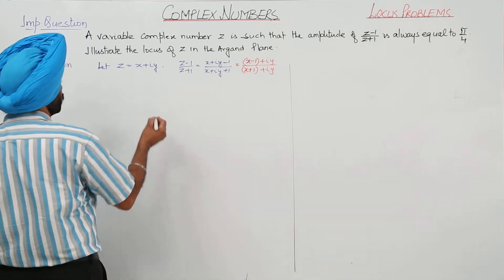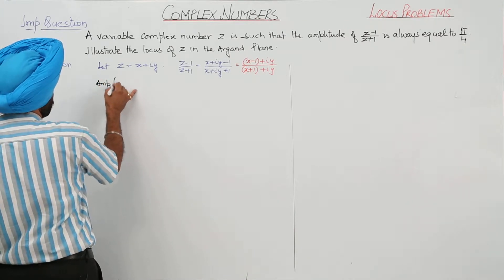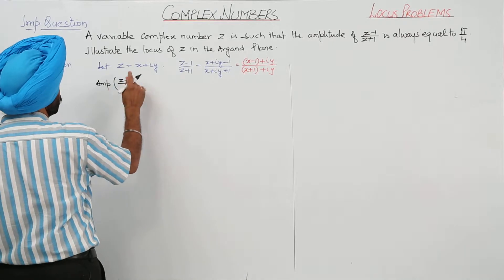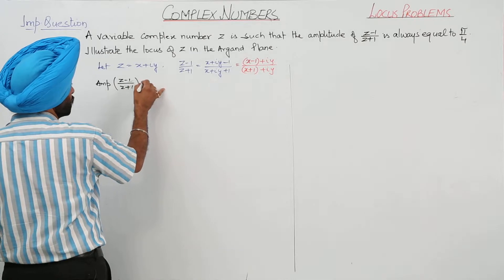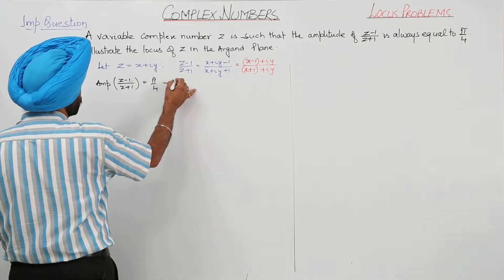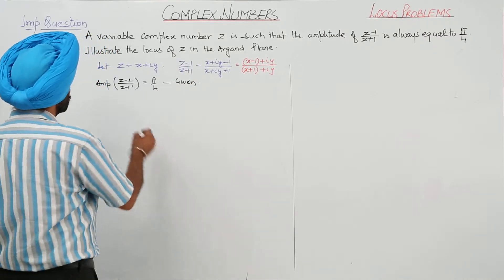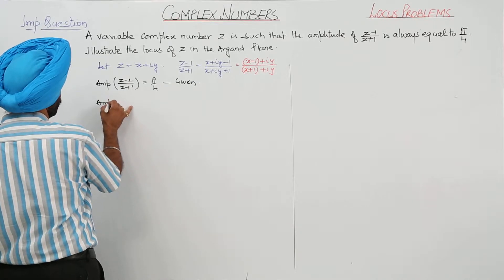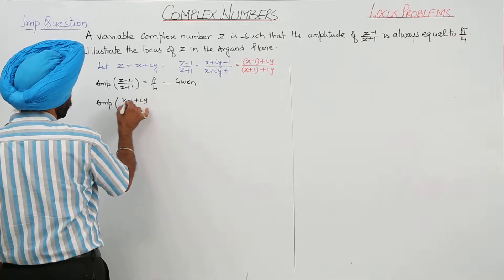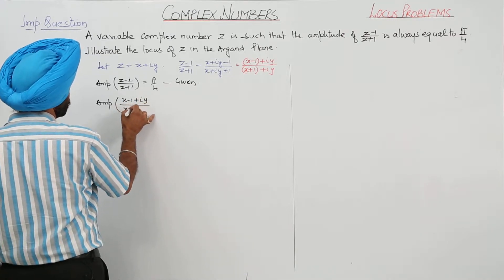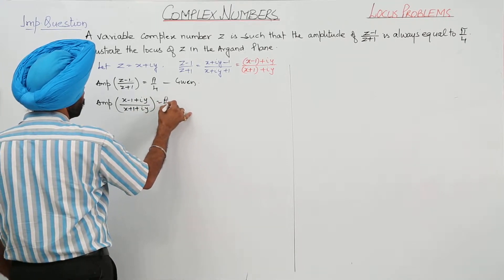The amplitude of (z minus 1) upon (z plus 1) equals π/4 — this is given to us. So the amplitude of (x minus 1 plus iota y) upon (x plus 1 plus iota y) is equal to π/4.